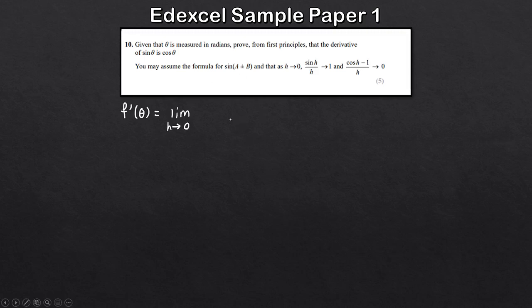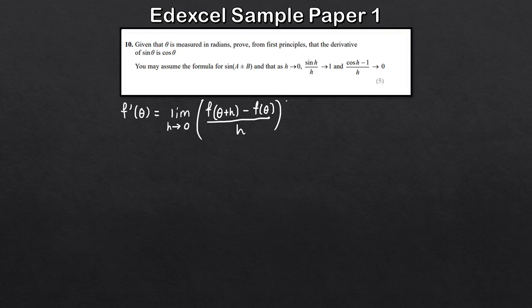First, let's note the formula for differentiation from first principles. So f prime of theta is the limit as h tends to 0 of f(θ + h) minus f(θ), all divided by h. For Edexcel, remember you are given this formula in your formula booklet, so you don't have to memorize it. Essentially this just gives us the gradient — the change in y over the change in x — and we take the limit as h tends to 0.